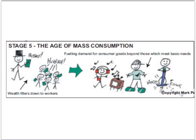As countries progress to the highest stage of development on Rostow's evolutionary ladder — stage five — more and more wealth begins to trickle down to the population as a whole as workers' wages improve. This fuels demand for consumer goods and services that go beyond basic needs. That is why Rostow called this highest stage of development the age of mass consumption.